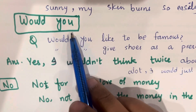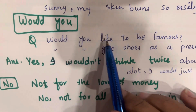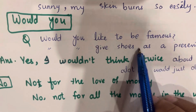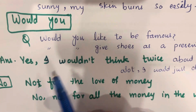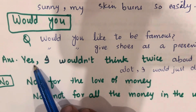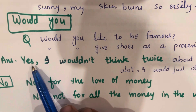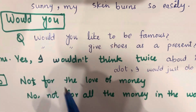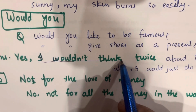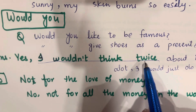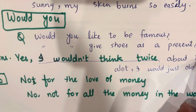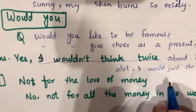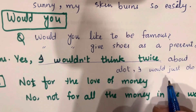If the examiner asks questions like 'would you like to be famous?' or 'would you give shoes as a present?', and your answer is yes, you can say: 'Yes, I wouldn't think twice about it.' This phrase means you would not hesitate — you would just do it.